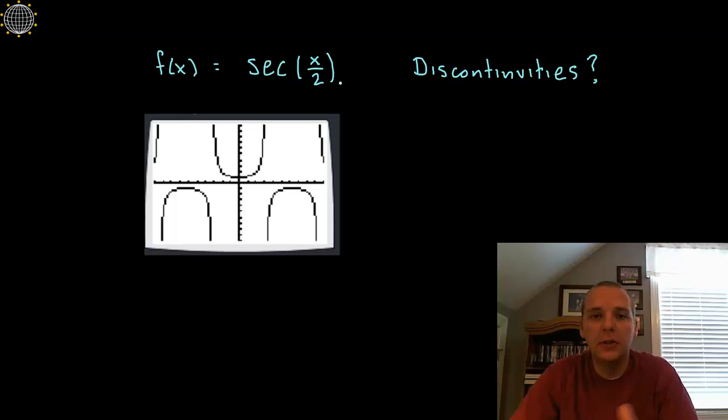Specifically, why I chose this one is I also wanted to mention something as far as what happens when you have multiple discontinuities. We can see that happening on the graph here because secant is periodic—it repeats itself over and over again. How would we express lots of discontinuities at once? We'll get there soon.